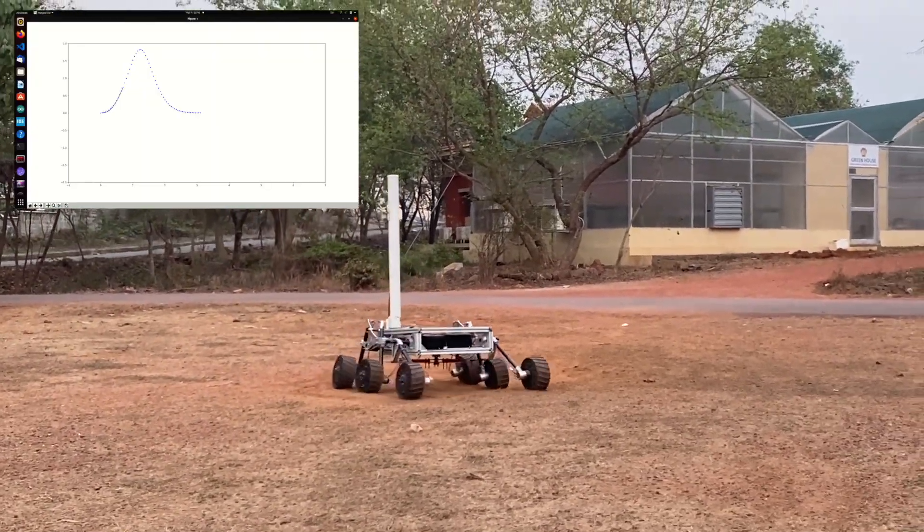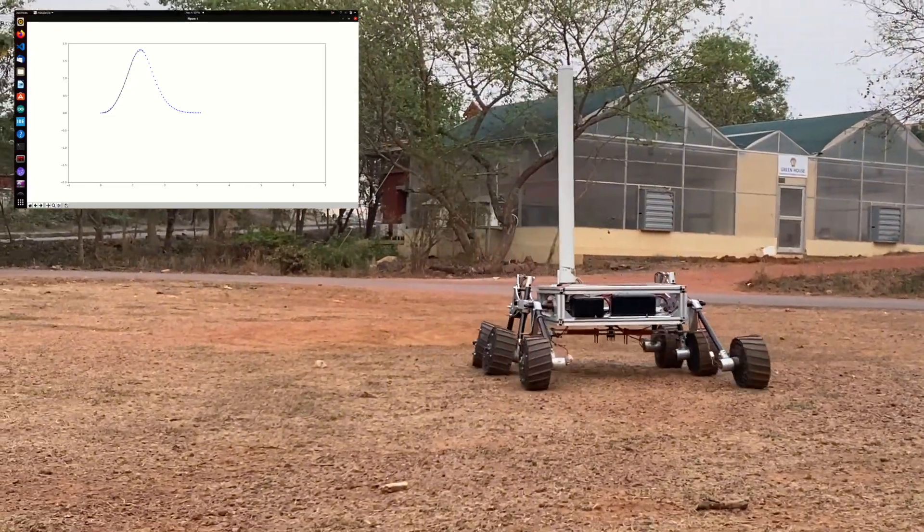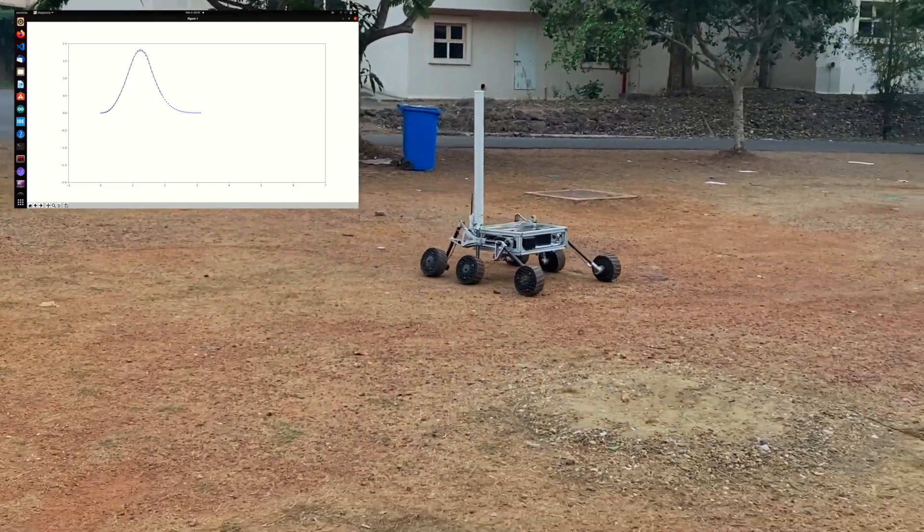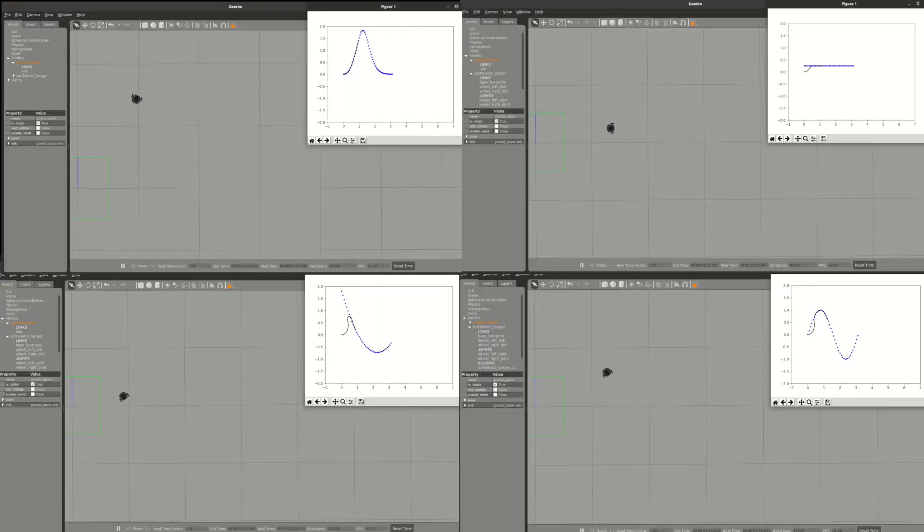The rover can autonomously traverse various paths using a pure pursuit controller, with the PID controller as a failsafe. The pure pursuit controller has been thoroughly tested using simulations before deploying it on the rover.